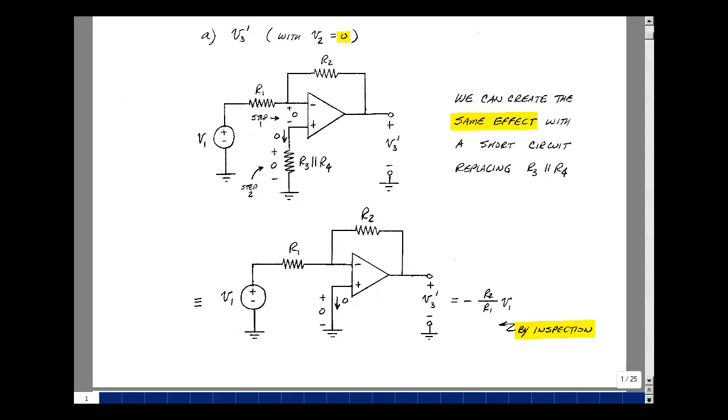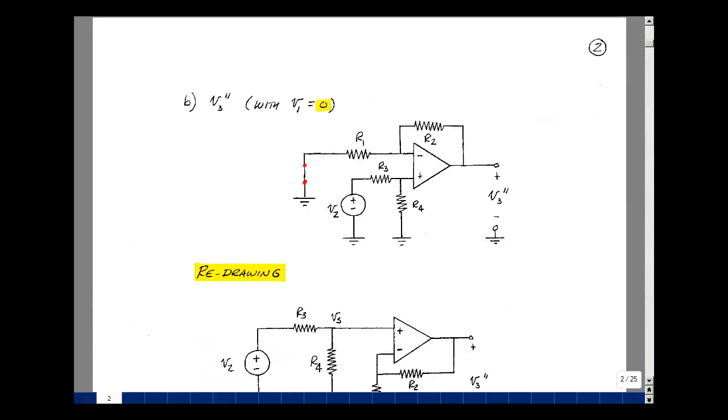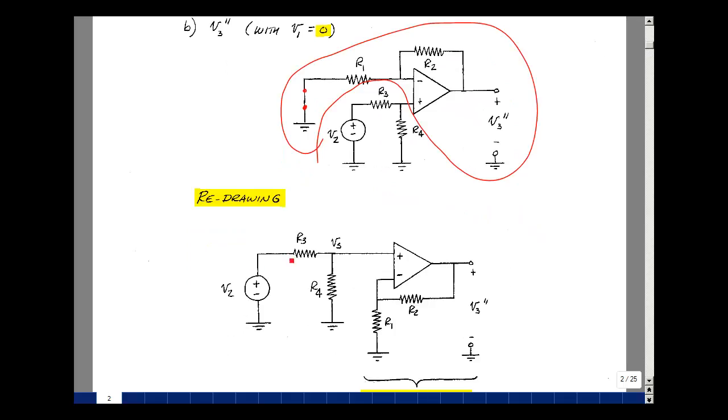Setting V1 equal to zero, we're going to short circuit where that source was, and now I'll call V3 due to the second source V3 double prime. If we stare at this long enough, you can almost see a non-inverting amplifier. Let's redraw this. Let's take V2 with R3 and R4, draw that over here, and that's going to go to the plus terminal of the op-amp.